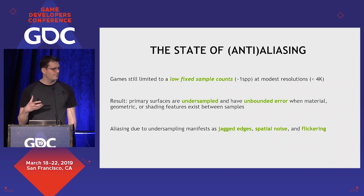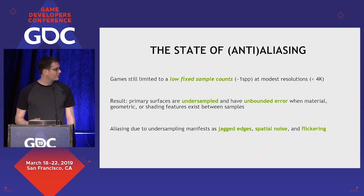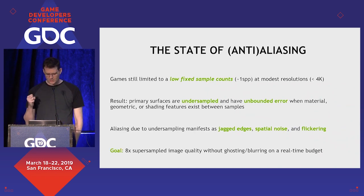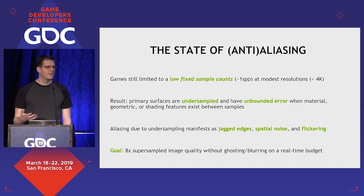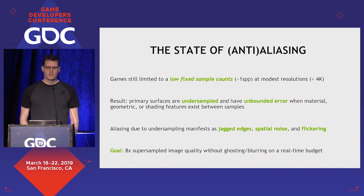Aliasing shows up as jagged edges on hard geometry, spatial noise, flickering, and specular flickering — and it's very obtrusive to your image. So our goal is to achieve something around 8x supersampled image quality without ghosting, blurring, or other artifacts, within a real-time budget. And this is very challenging.